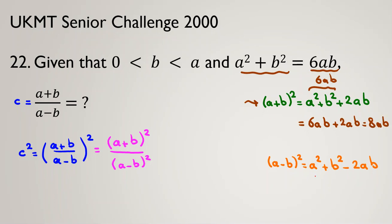Using the same approach, (a-b)² = a² + b² - 2ab = 6ab - 2ab = 4ab.